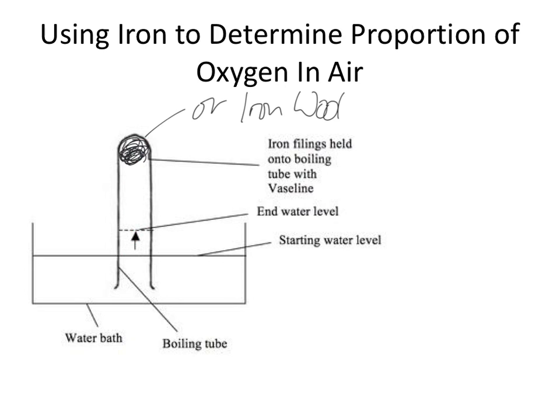Now this isn't a particularly accurate way of measuring the exact proportion of oxygen in the air. A boiling tube or test tube doesn't have graduated lines on the side, so it's very difficult to determine the exact proportion of air which has been lost reacting with the iron. You might think it's risen about twenty percent or a fifth of the way up the boiling tube, but it's not a particularly accurate way of doing this.